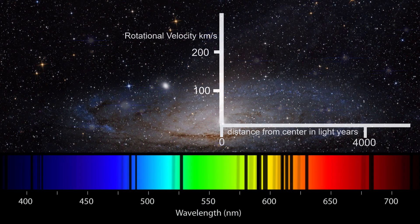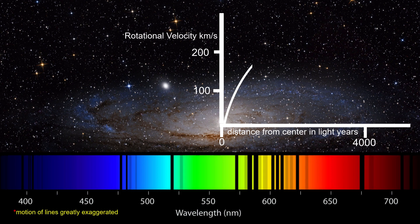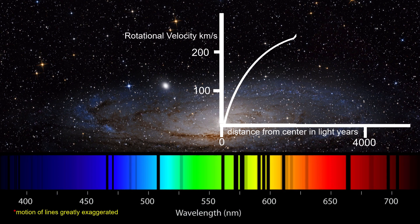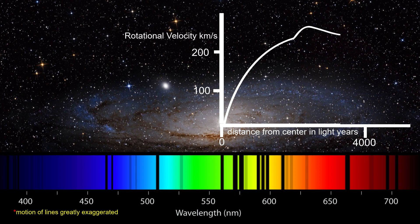We're almost there. Now, if we start from the center of the Andromeda Galaxy and start measuring the redshift as we move towards the edge of the galaxy, we end up with what's known as a rotation curve.